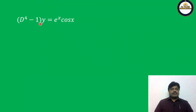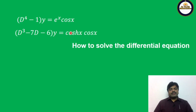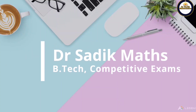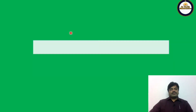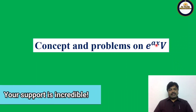Today we discuss concept and problems on e^(ax) into v. For example: (D⁴ - 1)y = e^x cos x, and (D³ - 7D - 6)y = cosh(x) cos x. How do you solve such type of differential equation? Today we discuss concepts and problems on e^(ax) into v.